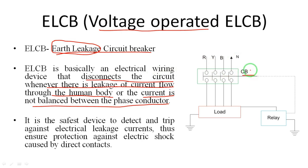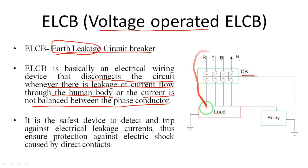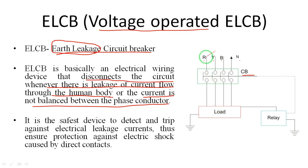In the diagram, CB means circuit breaker, and there is a switch fuse unit. R, Y, B — three phases with neutral — are connected to the load. Three-phase supply is connected to a three-phase induction motor as the load, and under normal conditions it will operate smoothly.